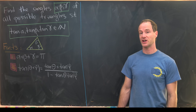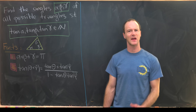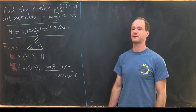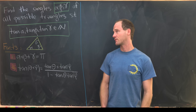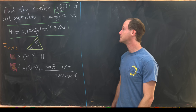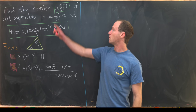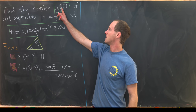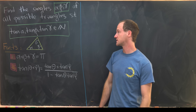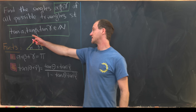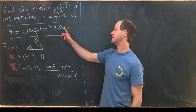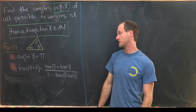Here I've got a nice classic geometry problem. I'm not sure of the origin of this problem, but I've seen it show up in a lot of different places, including several different contests, maybe with slightly different wordings. We want to find the angles alpha, beta, gamma of all possible triangles where tangent of alpha, tangent of beta, and tangent of gamma are all positive integers — natural numbers.